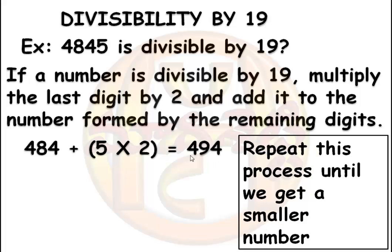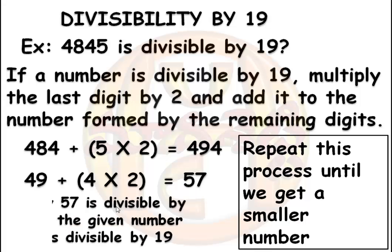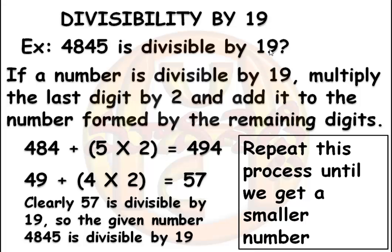Now again repeat the same process, applying it on the number 494. Here the last digit is 4. Multiplying 4 by 2 gives 8 and adding this result to the remaining digits, excluding the last digit, the number formed is 49. Adding these two we get 57. Comparatively it is smaller. Clearly 57 is divisible by 19, so the given number 4845 is also divisible by 19. This is the criteria for divisibility by 19.